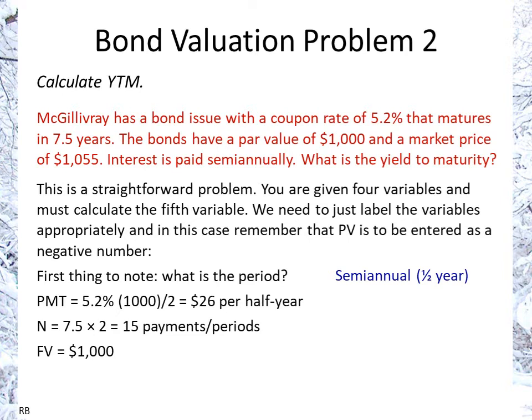Again, if you're not given a value with a question, often you can assume it to be $1,000. And $1,055 is the present value or the price. We have to keep in mind that we enter negative $1,055 for the present value.